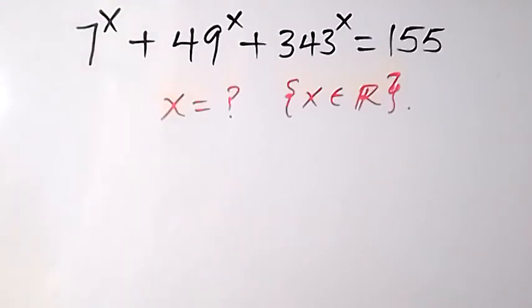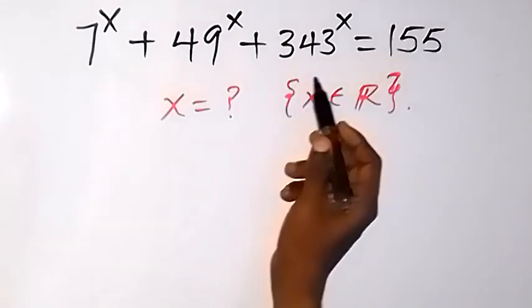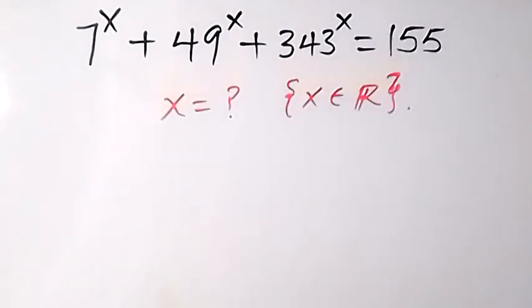Welcome to this class and thank you for joining us. Here we want to find the value of x given that 7 raised to power x plus 49 raised to power x plus 343 raised to power x equals 155, and x is a member of the real numbers.